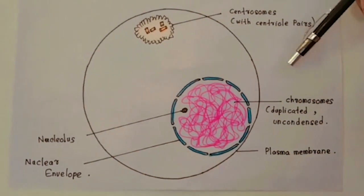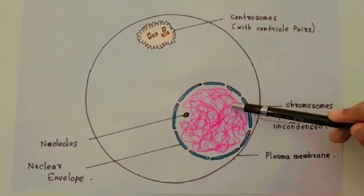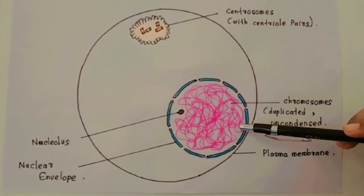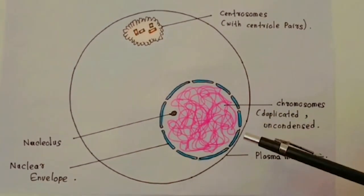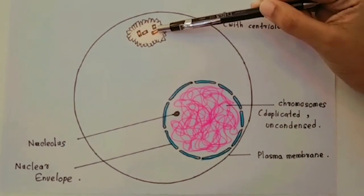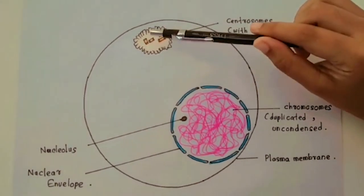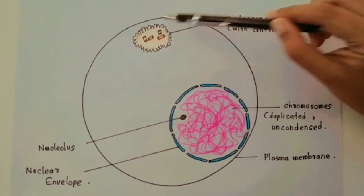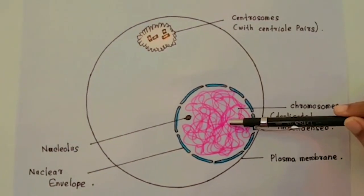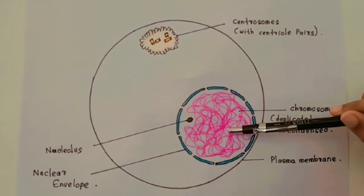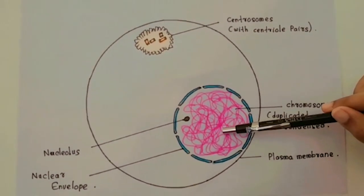In interphase, the cell has a nuclear envelope. The nucleus contains one or more nucleoli. Two centrosomes have formed by duplication of a single centrosome. Each centrosome contains two centrioles. Chromosomes duplicated during the S phase cannot be seen individually because they have not yet condensed.